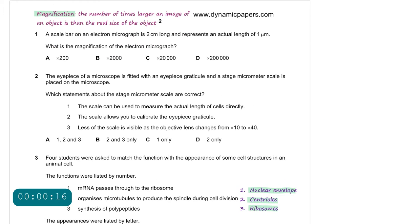Question number 1. A scale bar on an electron micrograph is 2 centimeters long. Here, 2 centimeters is the image size and represents an actual length of 1 micrometer. What is the magnification of the electron micrograph?